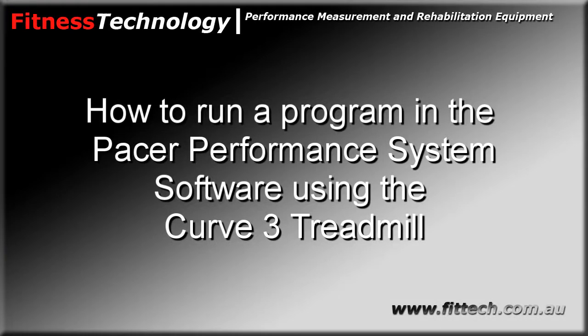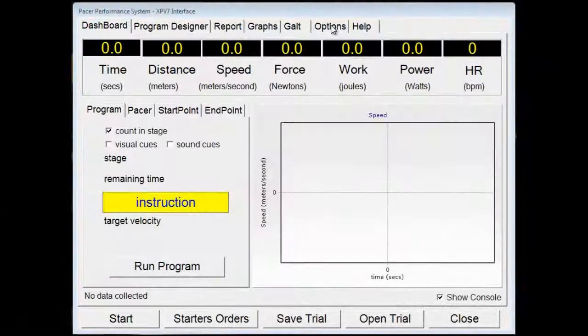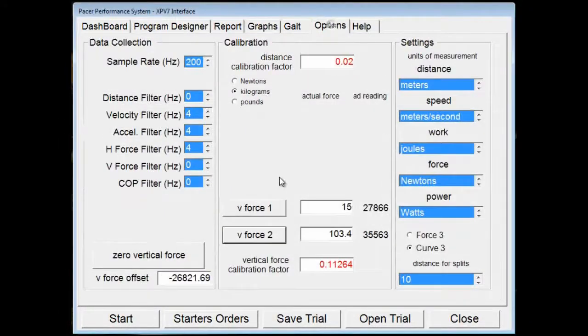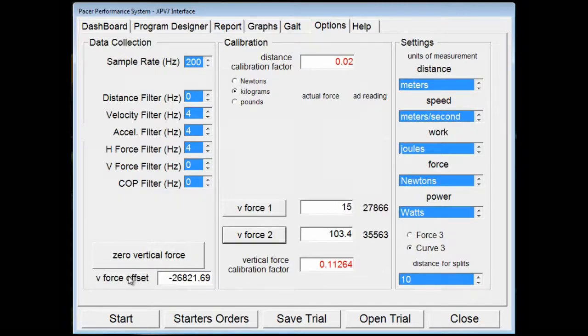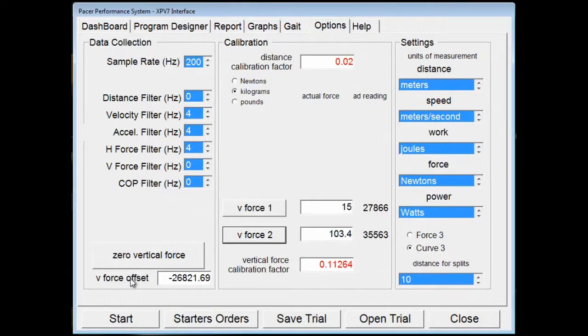I'm now going to go through the process for running a program file within the PASA software for the Curve 3. Start by going to Options and zeroing the vertical force with no mass on the deck of the treadmill. To do this, simply click on the Zero Vertical Force button as shown here.